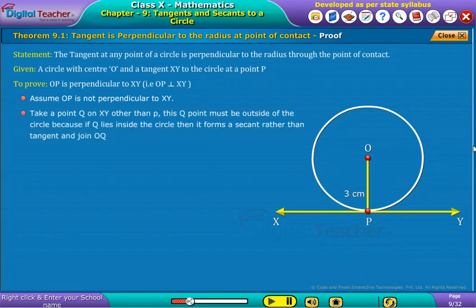Now, take a point Q on XY other than P. This Q point must be outside of the circle. Because if Q lies inside the circle, then it forms a secant rather than tangent and join OQ.